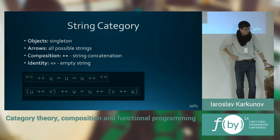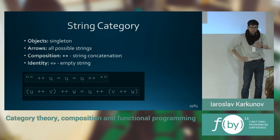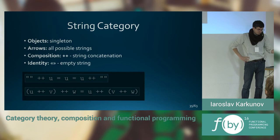By analogy, there is string category. Objects there is only one object, singleton. Arrows are all possible strings. Composition is concatenation. Identity is an empty string. You can see the properties of associativity and identities below.